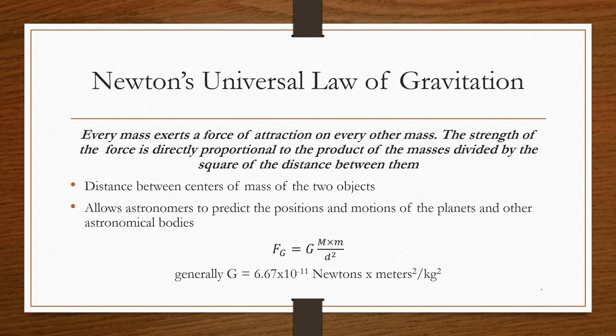And so, now we're, this is how we move on to Newton's universal law of gravitation. Every mass exerts a force of attraction on every other mass. The strength of the force is directly proportional to the product of the masses divided by the square of the distance between them. The law of gravity allows astronomers to predict the positions and motions of the planets and other astronomical bodies. In this case, we have big M and little m. These are the masses of the two objects that we are talking about. If either M or m, so the mass of one of these objects changes, but everything else remains the same, then the force will increase by the same amount. And this is called direct proportionality.